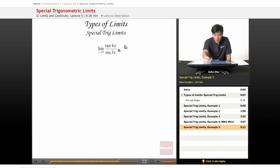So right away, let's do limit as x goes to 0, sine of 4x over cosine of 4x all over sine of 3x.